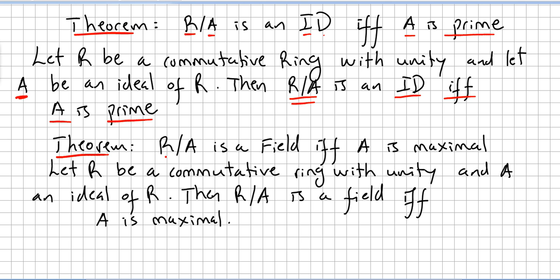Another theorem: Let R be a commutative ring with unity and A an ideal of the ring. Then the factor ring R/A is a field if and only if A is maximal. Both proofs are straightforward — if anyone needs a proof or wants to see one, I can make a video for that.